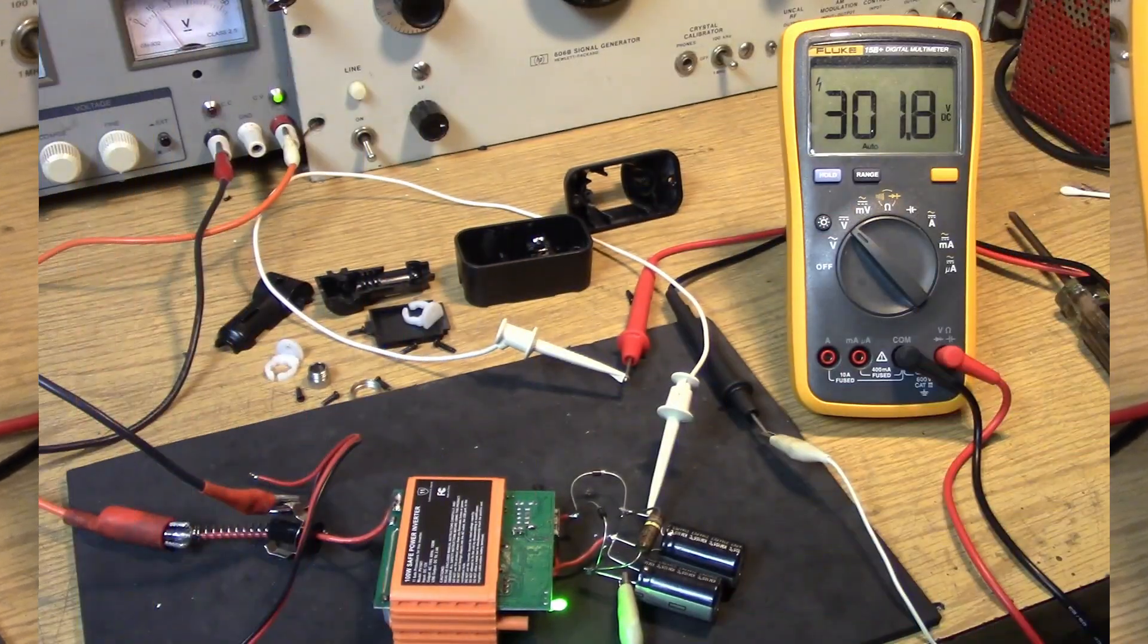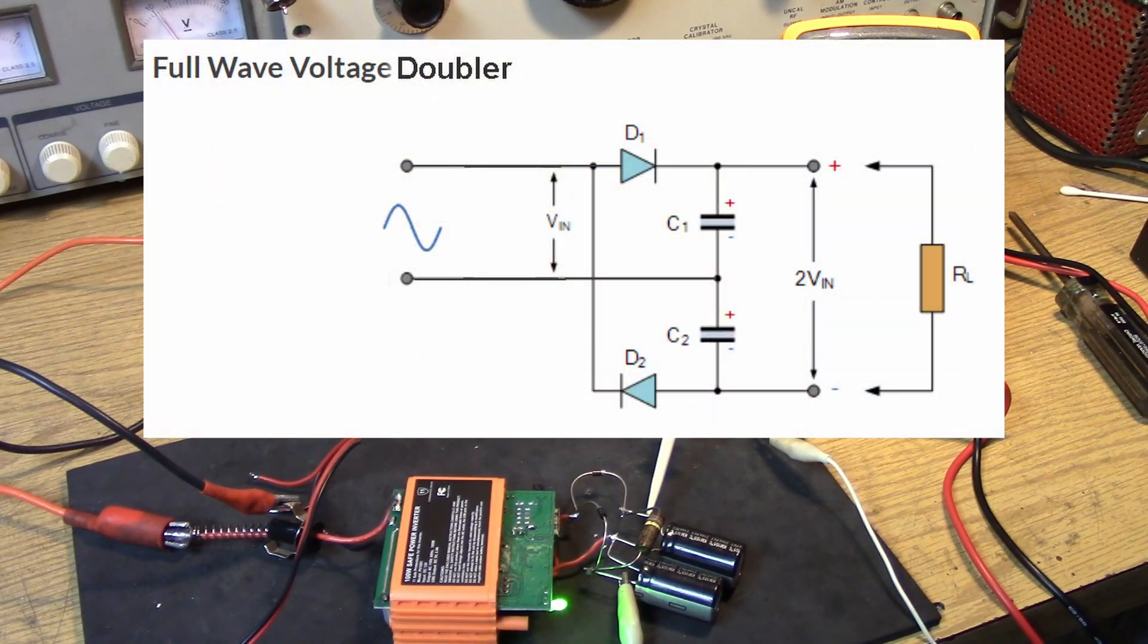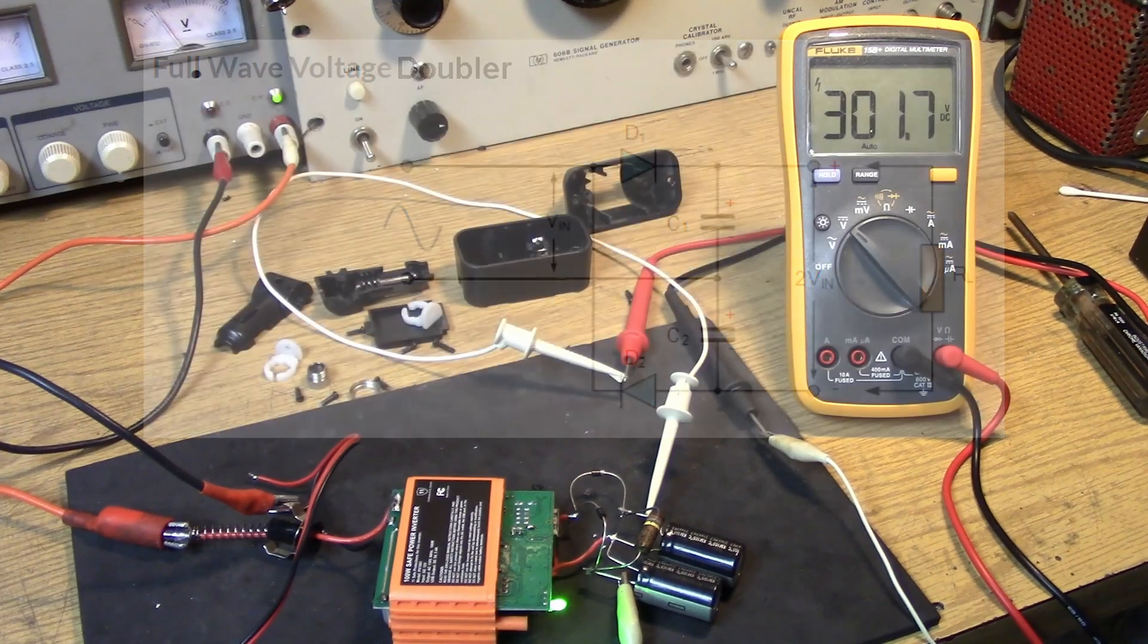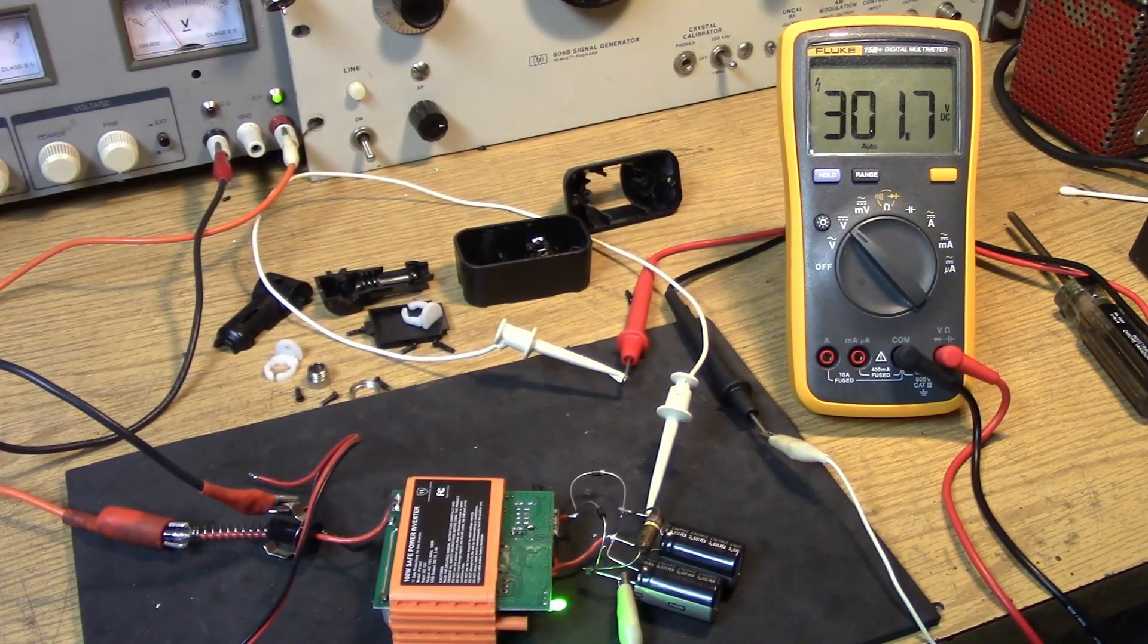So, here's the voltage doubler. This uses two diodes, two capacitors, and I have some type of a bleeder resistor here. It looks like 180K. We're getting a solid 300 volts out. I imagine under load, that's going to go down to somewhere around 250.